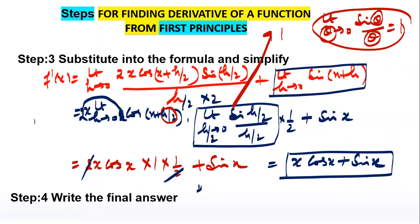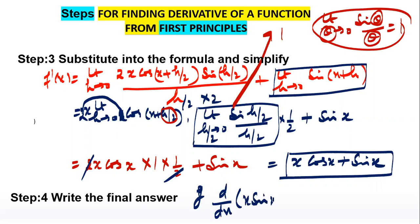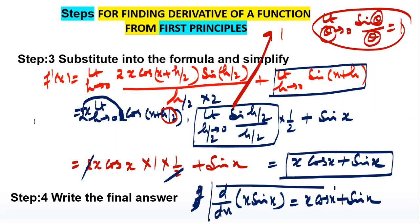So the derivative of x·sin(x) is equal to x·cos(x) + sin(x). That's all in this video. Thank you for watching.